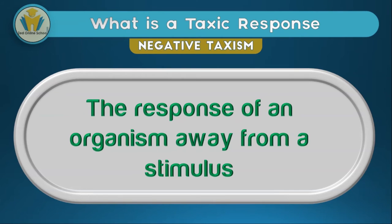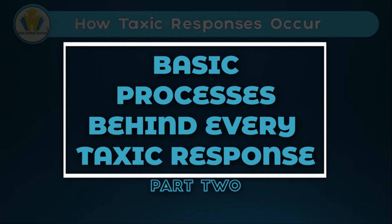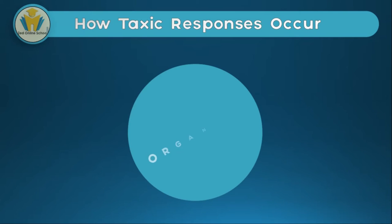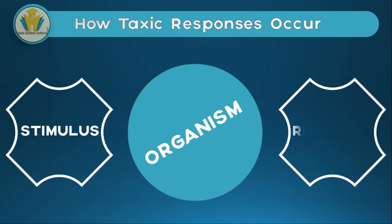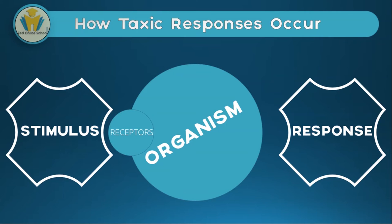Now let's look briefly at how taxis responses occur. In every taxis response we have an organism. Apart from the organism we have a stimulus, and after the organism is exposed to a certain stimulus — which causes some changes in the organism — there will be a response. The organism uses receptors to detect the stimulus, and when the receptors sense a stimulus the organism causes a movement through the effectors. There will be a stimulus sensed by the receptors, then the organism causes the effectors to produce a response.